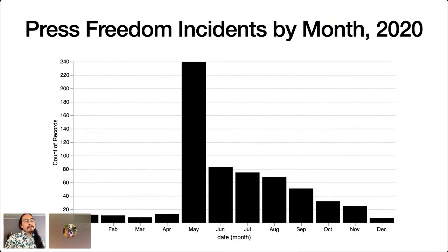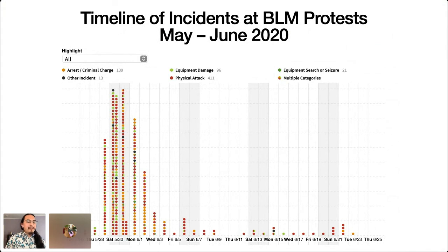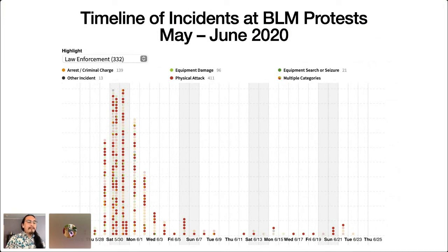Digging into 2020 specifically, you can see how press freedom incidents spike in May when the protests began, and then slowly taper off but don't return to baseline levels as protests continue over the course of the year. This timeline of incidents uses our API to provide quite a bit of interactivity — if you visit the site live, you can hover over each dot to get details about the specific incident it represents, and use the highlight menu to call out incidents by city or aggressor. If you ask the dropdown to highlight incidents where the assailant was law enforcement, you can see that the majority of physical attacks on journalists during the protests were perpetrated by law enforcement officers.